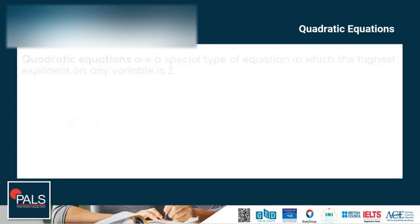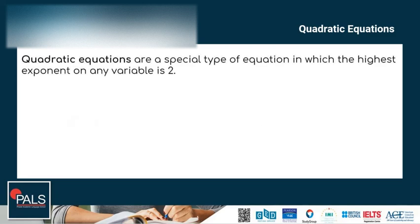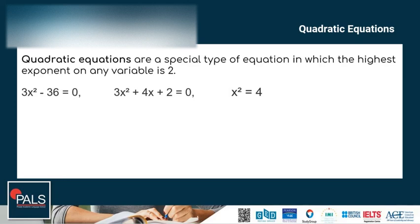Let us define quadratic equations. As it says on the screen, quadratic equations are a special type of equation in which the highest exponent on any variable is 2. For example, 3x squared minus 36 is equal to 0 — the exponent of x is 2. Another example: 3x squared plus 4x plus 2 is equal to 0, and the highest exponent of variable x is also 2.